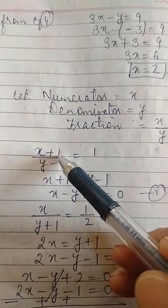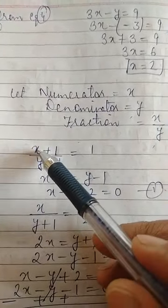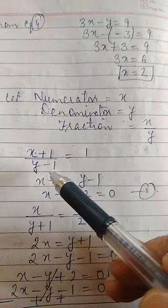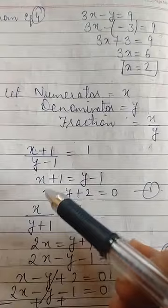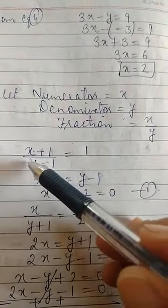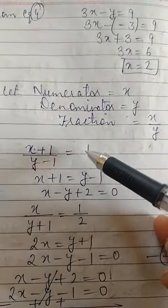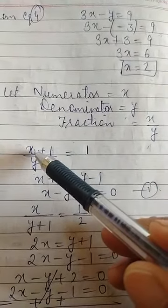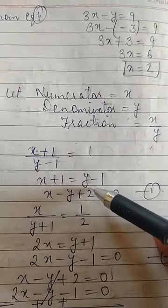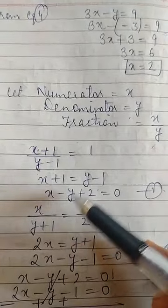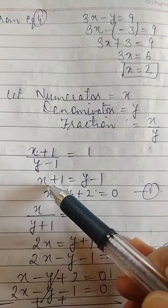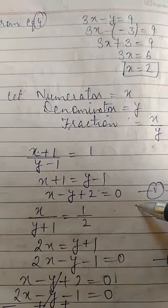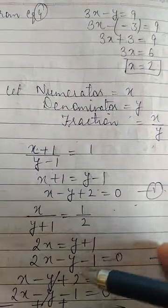By the first statement, adding 1 to the numerator and subtracting 1 from the denominator gives (x+1)/(y-1) = 1. By cross multiplying: x + 1 = y - 1, rearranging to the left side gives x - y + 2 = 0. Let this be equation number 1.